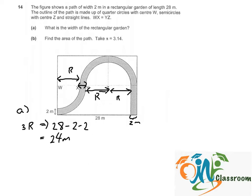24 meters. And the radius equals 24 divided by 3 equals 8 meters. So now we can label: this is 8, this is 8, and this is 8.